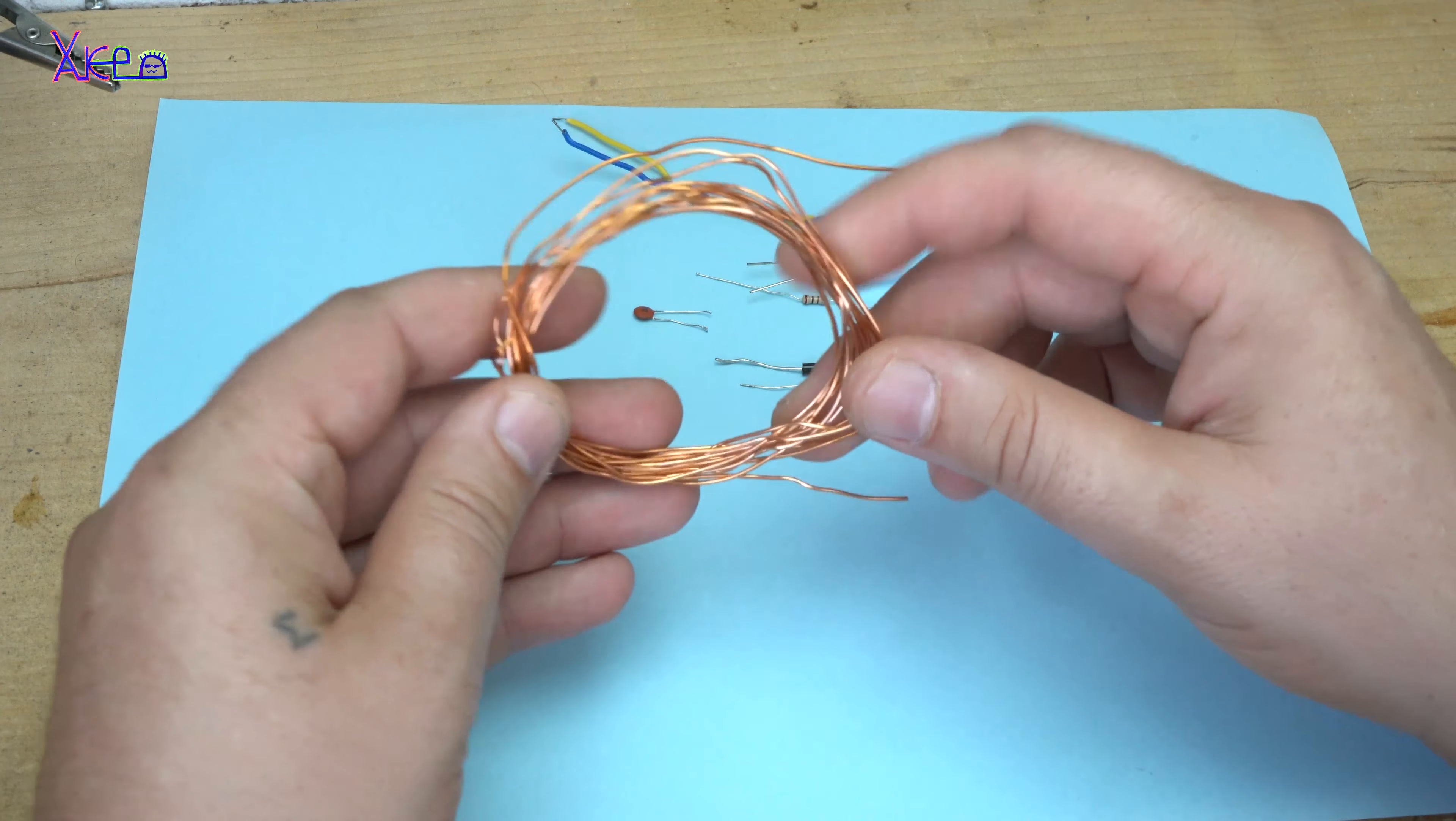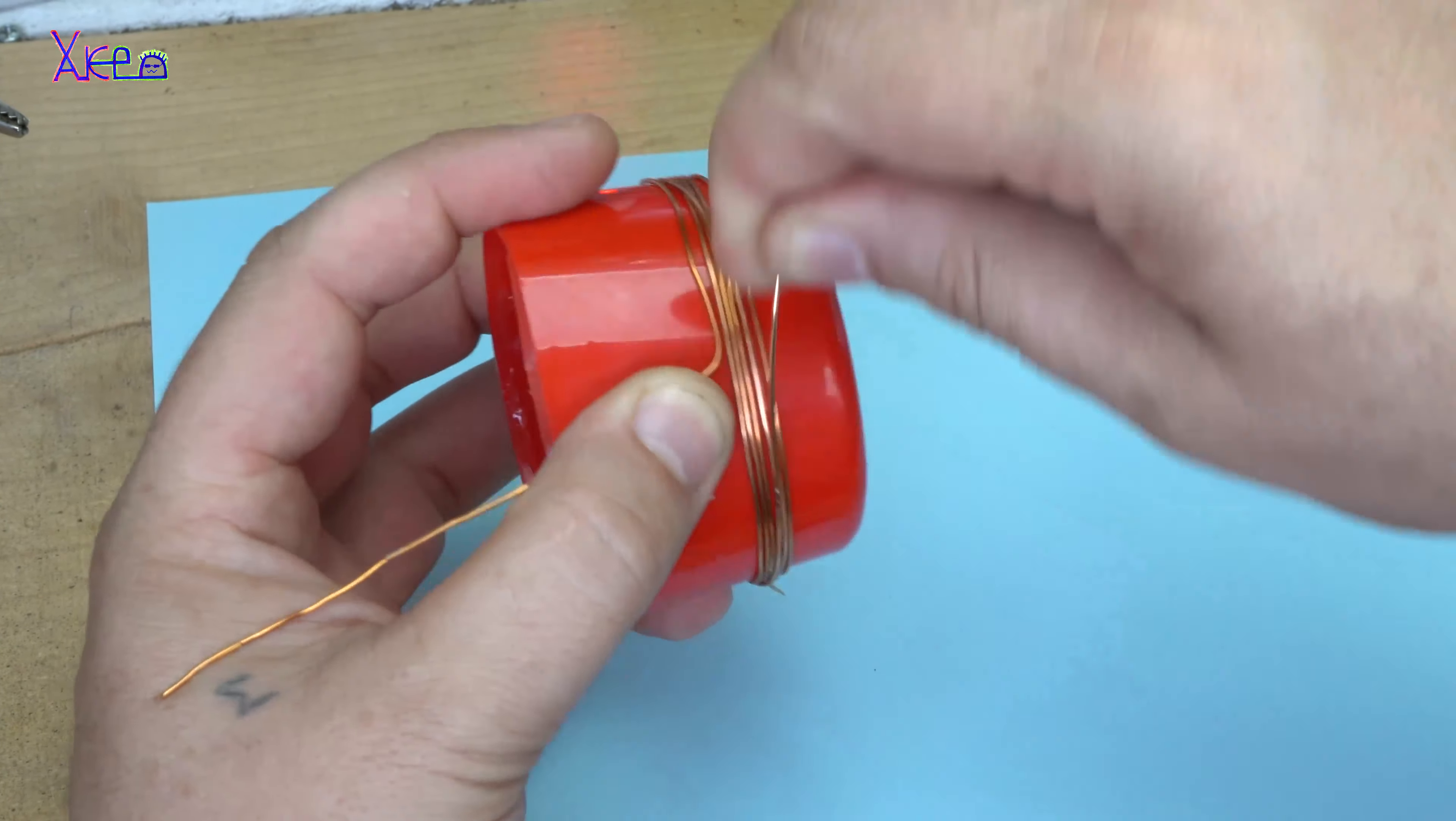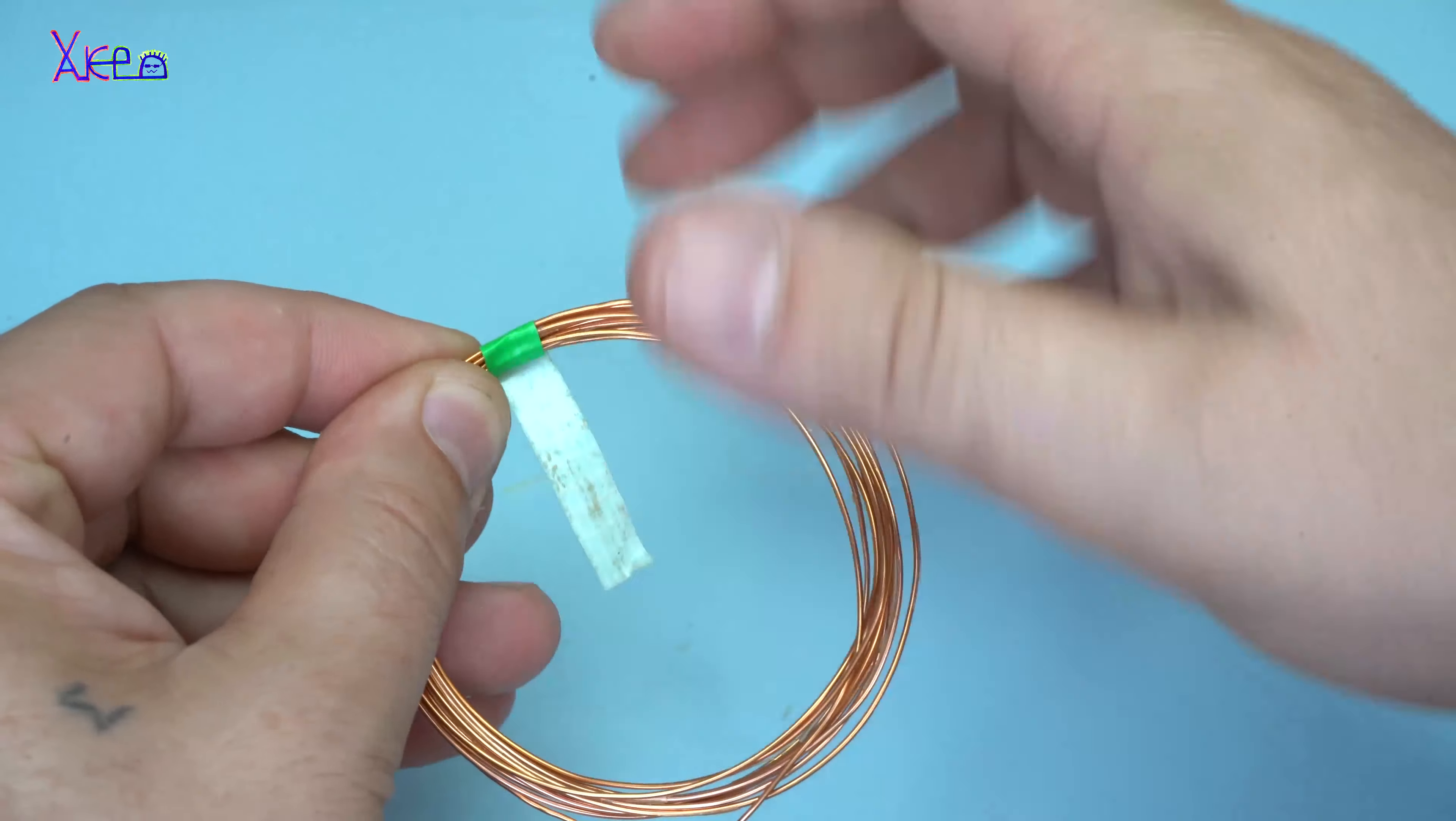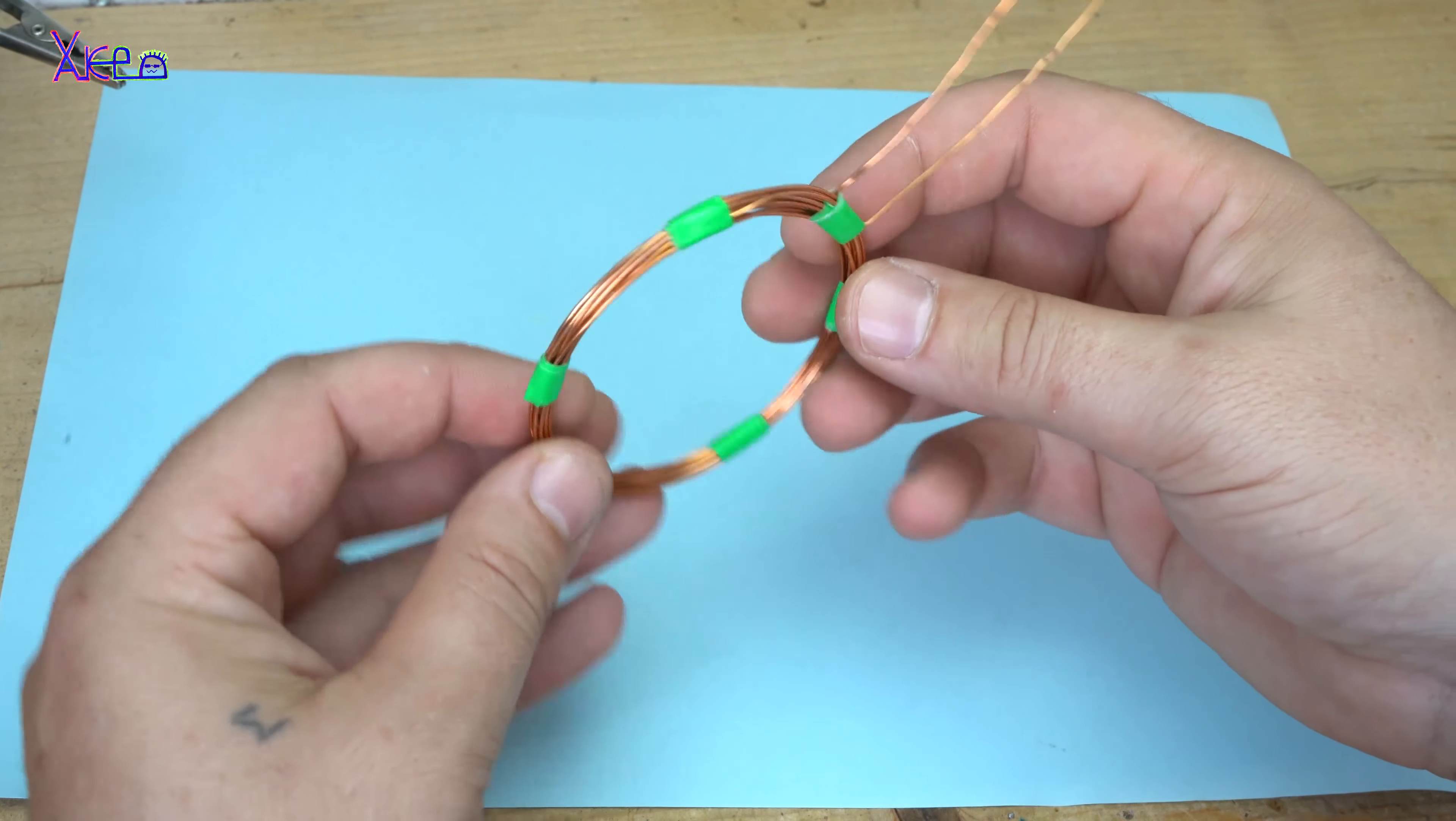The first thing that I will make is the coil and I'm going to use this plastic cap which diameter is six centimeters and I'm going to wind it on this. The coil is finished and I tied up with electrical tape and you should get something like this.